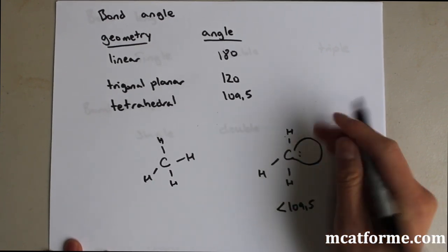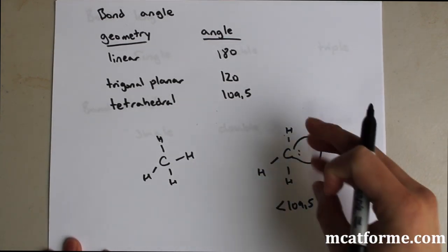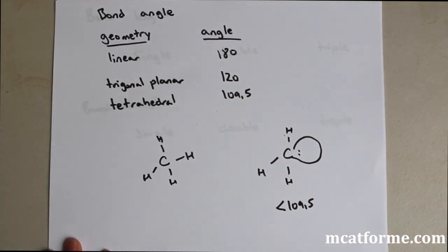This lone pair will push things outwards that way. So it'll take up more space, and it'll push these, so it'll decrease the bond angle. It won't decrease it by much, but it still is decreased.